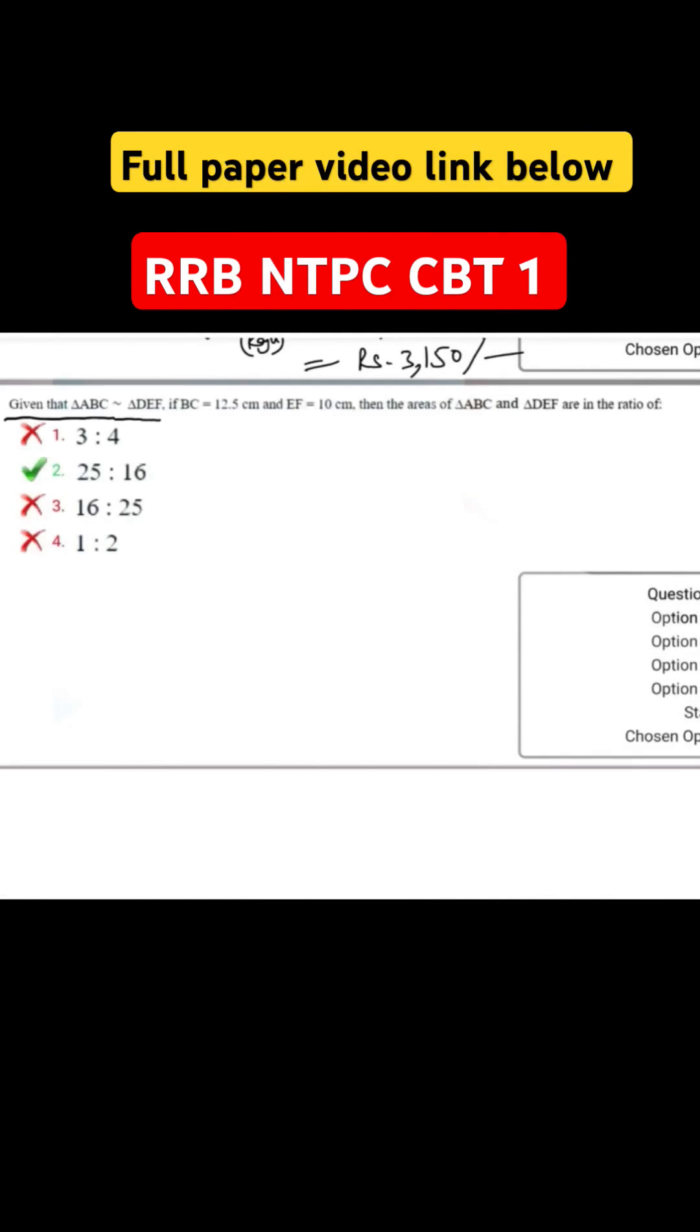Given triangle ABC is equal to triangle DEF, if BC is 12.5 cm and EF is 10 cm, then the areas of triangle ABC and triangle DEF are in the ratio of - given similarity rule is given.